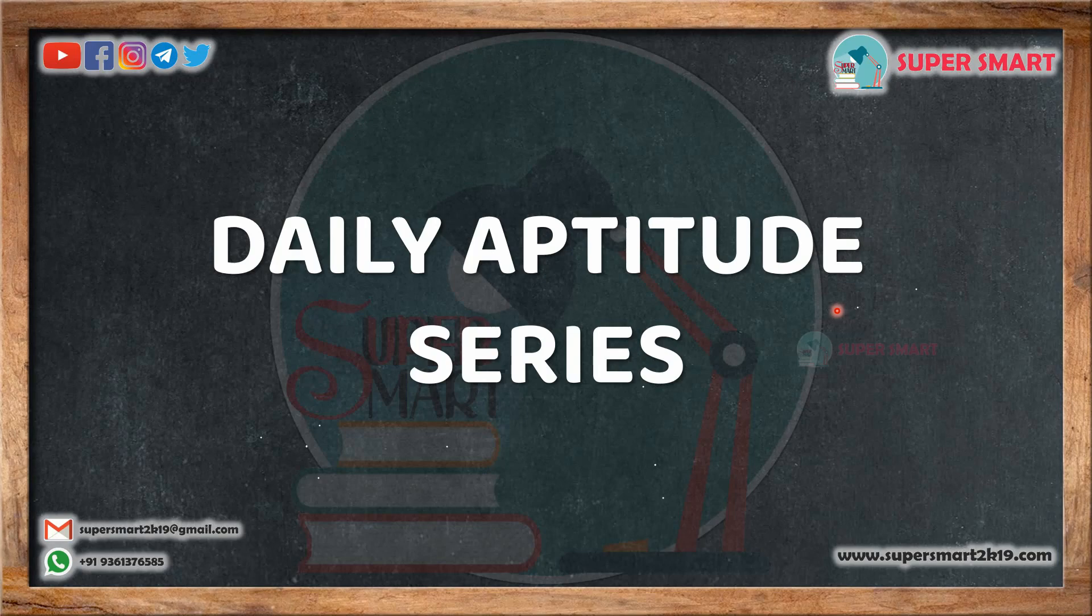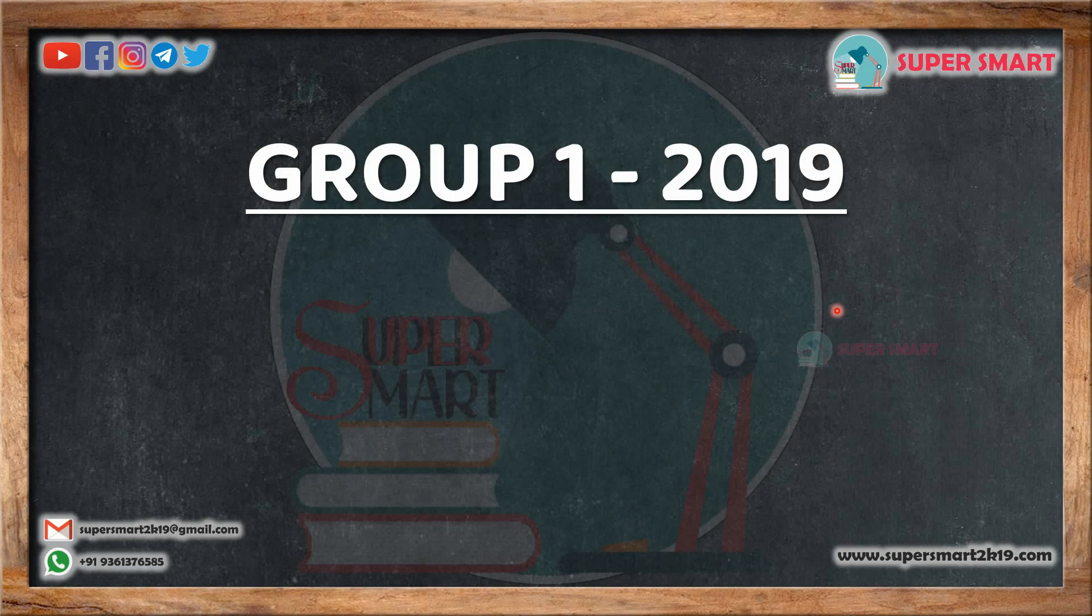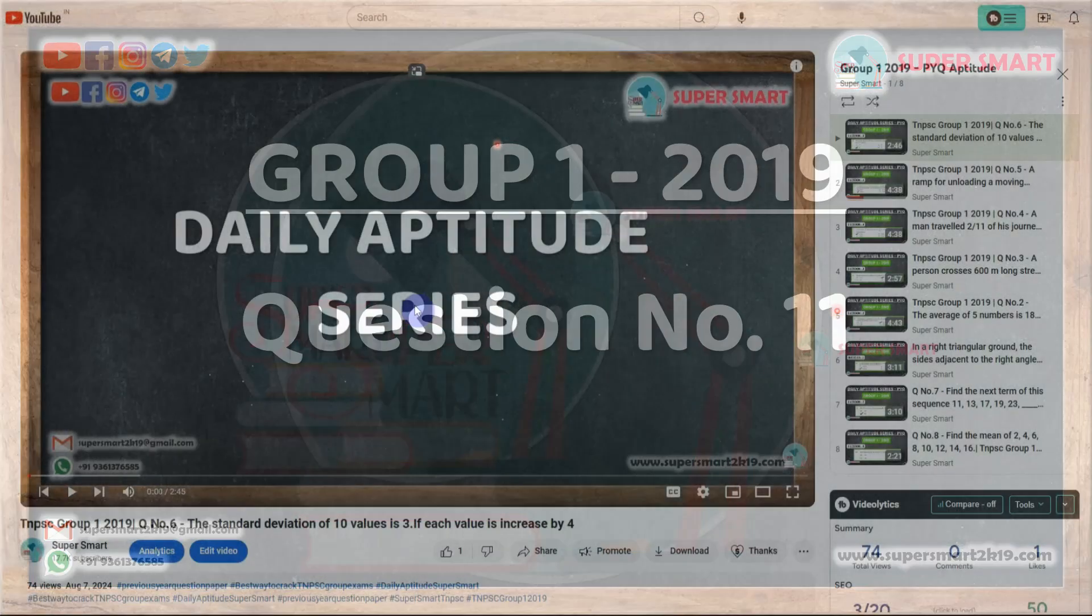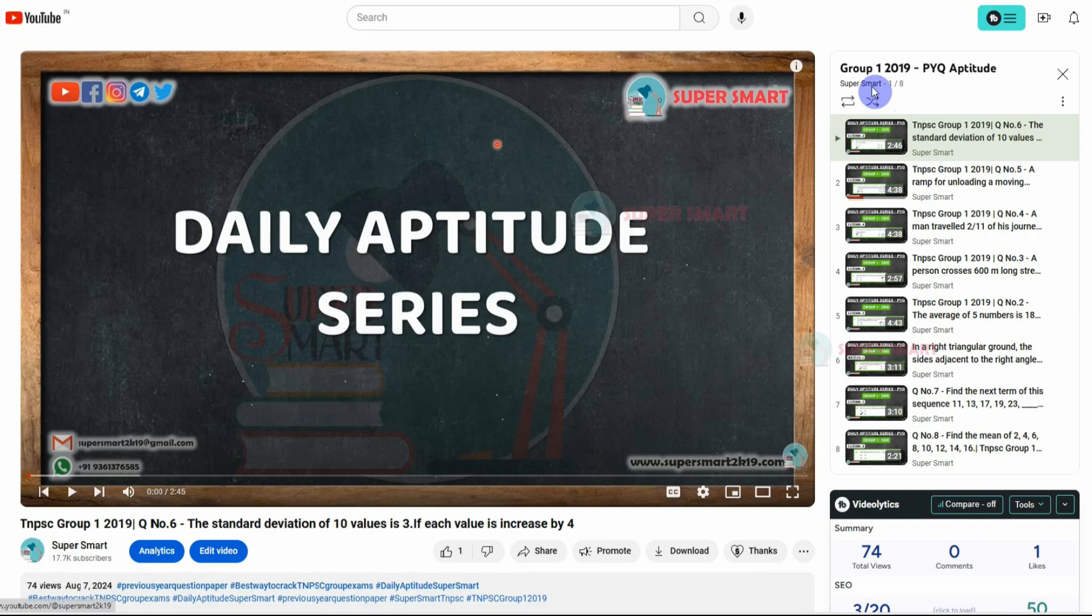Hi guys, welcome back to my channel, SuperSmart. In the daily aptitude series, we will see question number 11 in the 2019 question paper. Already in the question paper, we have created a playlist, so you can see what you want to do. There is a link below this playlist. I have already posted questions, so you can see what you want to do in the next video.